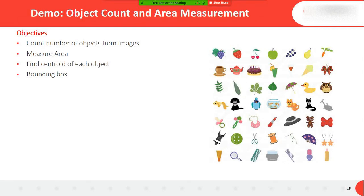I am going to show you a very useful and good example. Here is my image, and this is my objective: image counting of number of objects from the images, measure the area of every object, find the centroid of every object available in this image, and what is the bounding box — meaning the width and height of every object.